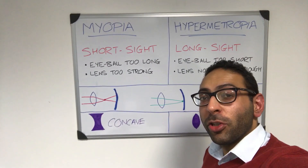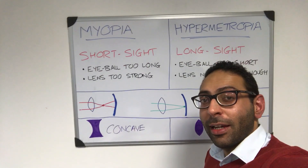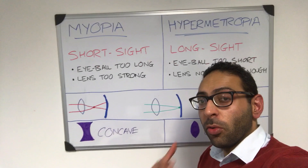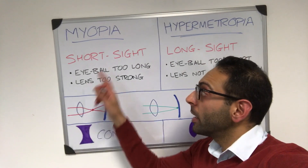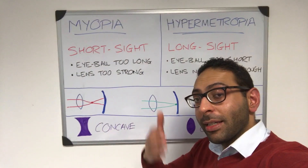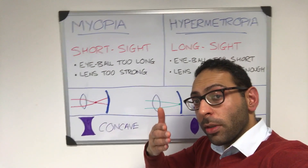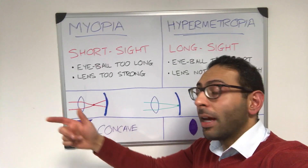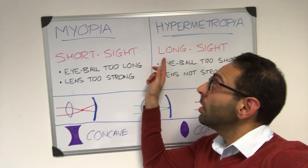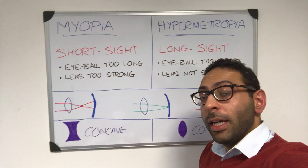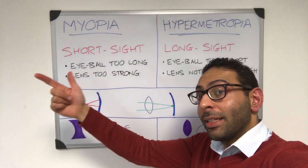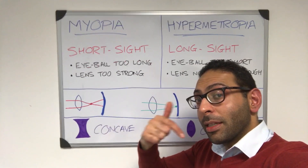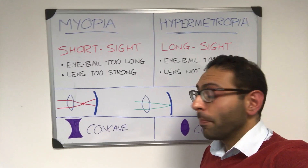I've been asked to make a quick video on short-sightedness and long-sightedness and the key difference. Short-sightedness, or myopia, is when you can see things clearly up close but you can't see things in the distance. Long-sightedness, or hypermetropia, is when you can see things in the distance but you can't see things very well up close.